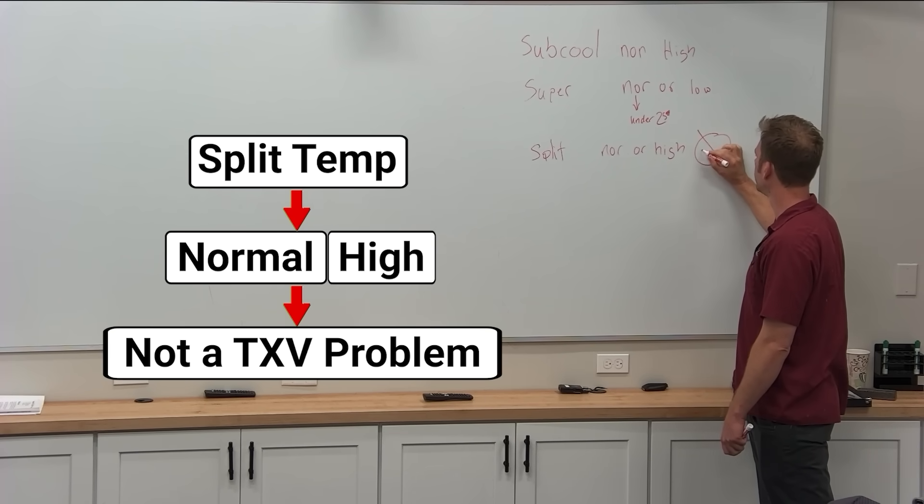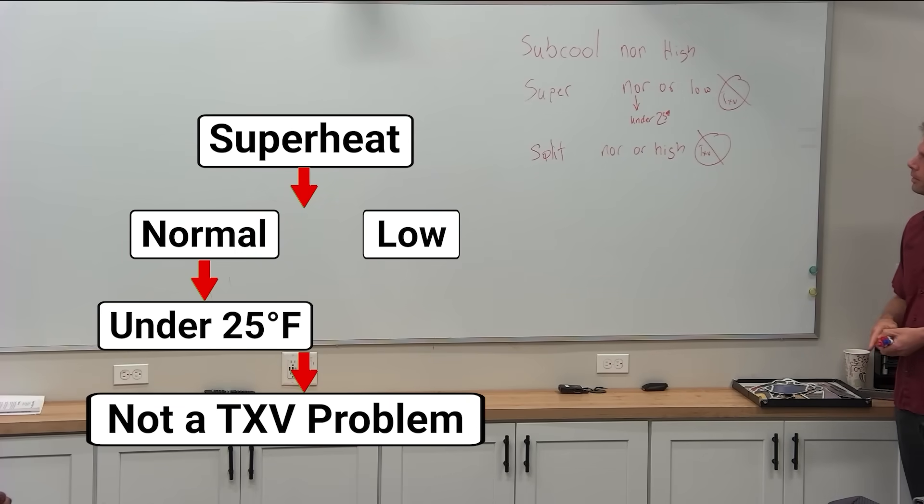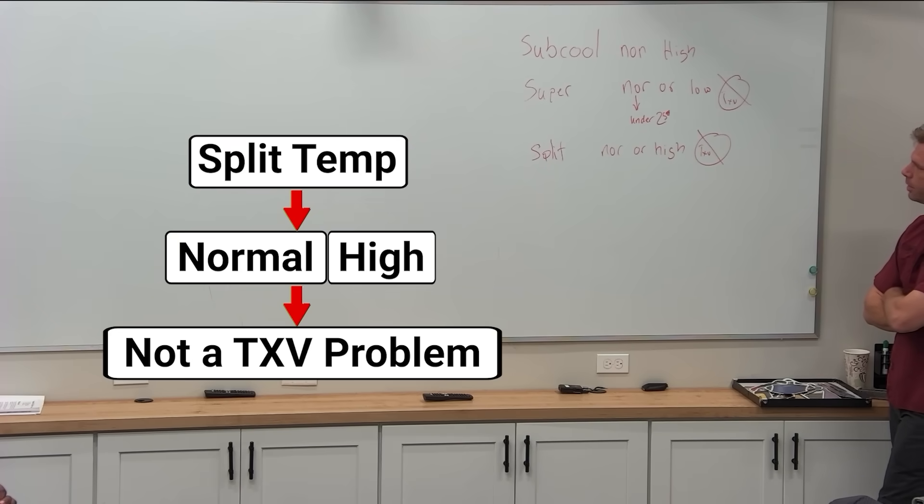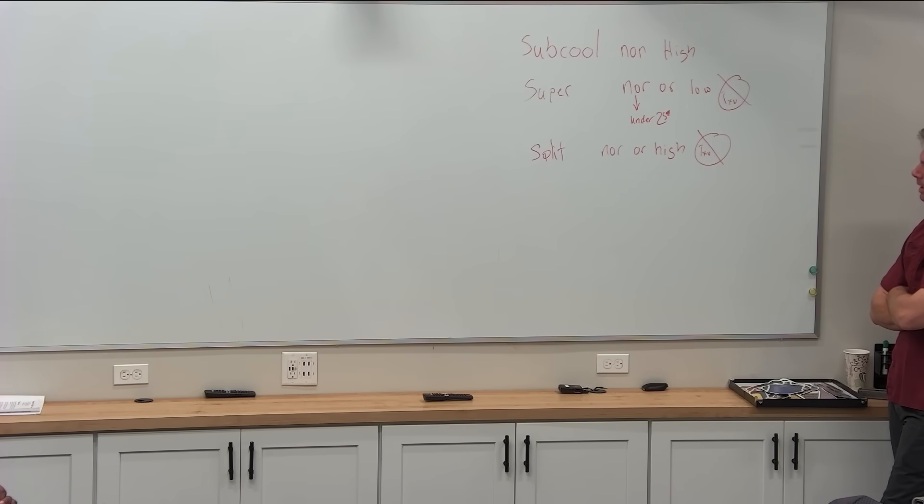So we'll put that on here too. Normal or high subcool? We'll do the TXV in here. Superheat normal under 25, low? Not the TXV. Split normal or high? Not the TXV. So that should eliminate half of the misquoted TXVs that we had.